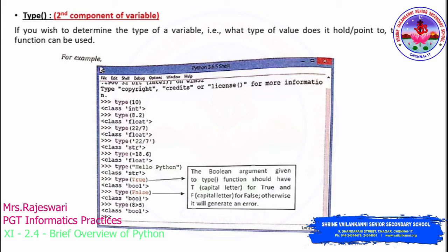Type represents which data type a particular variable or value belongs to. To find this, use the type() function. For example, type(10) will return 'class int' because 10 belongs to the integer data type. type(3.5) returns float since it has a fractional part. If you enclose 3.5 in quotes, type('3.5') returns 'class str' because anything enclosed in quotes is considered a string.